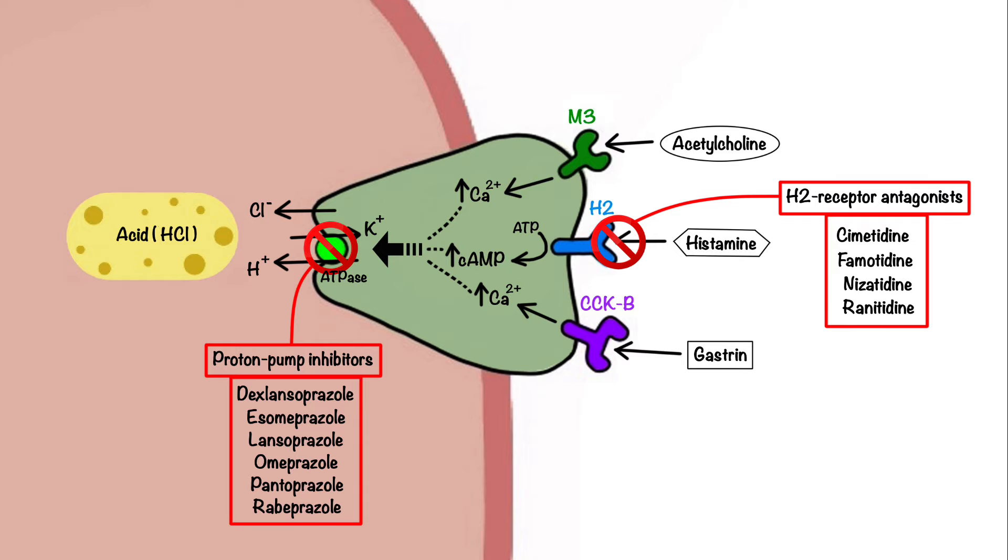While H2 receptor antagonists and proton pump inhibitors can provide sustained suppression of gastric acid secretion, patients needing immediate relief from their symptoms may benefit from faster-acting agents belonging to a drug class known as non-systemic antacids.